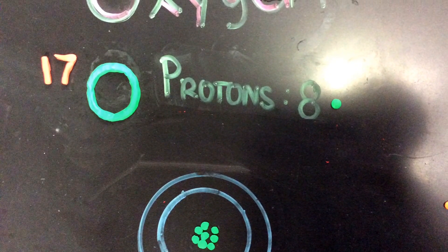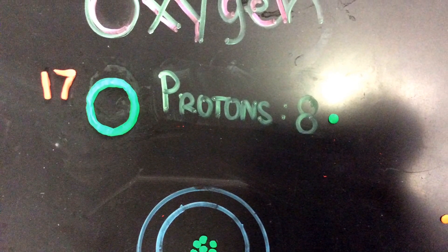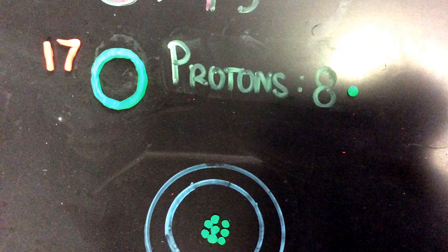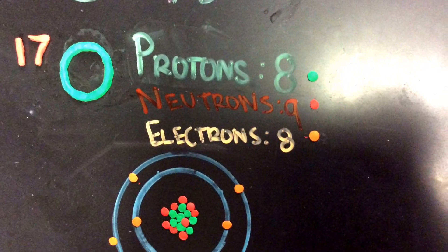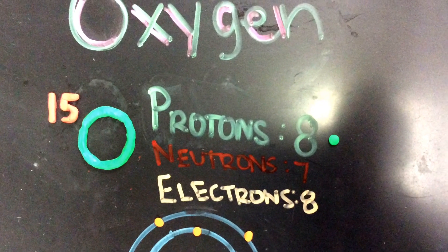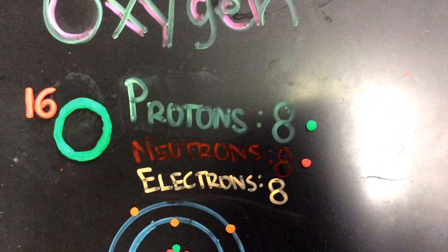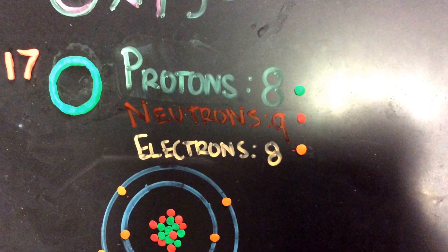The last Oxygen isotope we're going to cover today is Oxygen-17. In 1949, Professor William Giauque won the Nobel Prize for his work with Professor H. L. Johnston on the discovery of natural Oxygen-17 in the atmosphere using the absorption spectra. Oxygen-17 is not quite abundant. It has 8 protons, 9 neutrons, and 8 electrons. So we have Oxygen-15 that's missing a neutron, Oxygen-16 — the boring air that we just breathed — and then Oxygen-17, the overachiever.